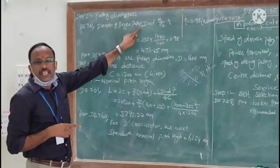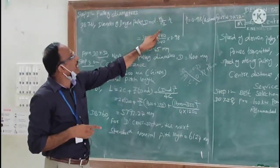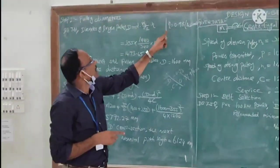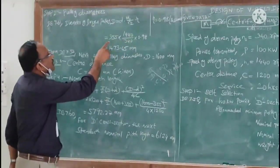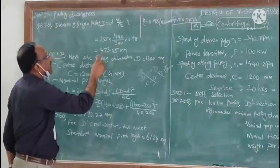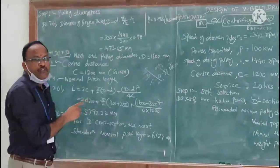The diameter of larger pulley is given as capital D equals small d times N1 by N2 times efficiency. Here we can assume the efficiency as 0.98. Now substitute these values: 355 times 1440 by 340 times 0.98. We can get the value as 1473.45 millimeter.